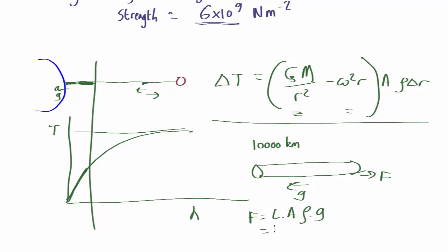So the length is 10 to the 4 kilometers, so 10 to the 7 meters, area of 1, density is about 10 to the 3, g is about 10 to the 1, so that's about 10 to the 11 newtons per meter squared.